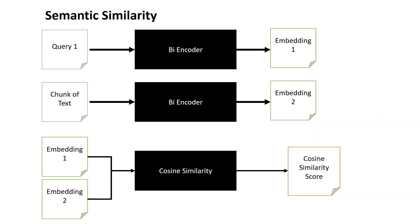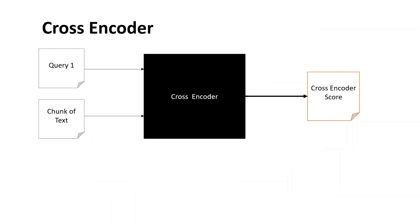With semantic similarity, you pose a query — a question — and it passes through a bi-encoder which creates an embedding. Please watch my lecture on embeddings and cosine similarity for depth on that topic. The second part is that a chunk of text is also passed through the bi-encoder to create an embedding. We then compute the cosine similarity between the query embedding and the chunk embedding. The higher the cosine similarity score, the more similar the query and chunk of text.